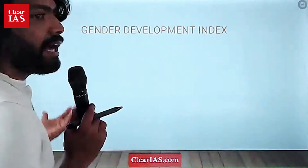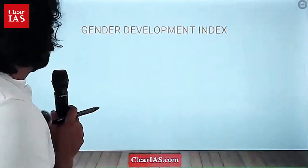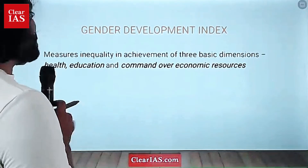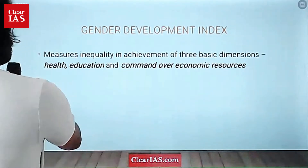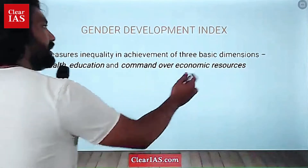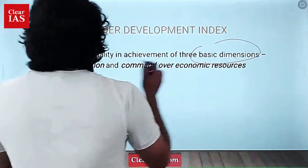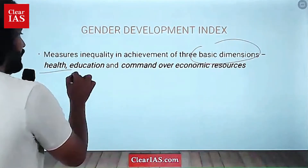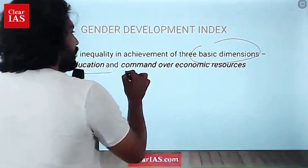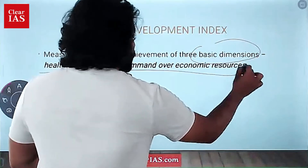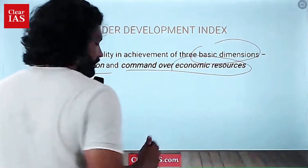The Gender Development Index, GDI, measures inequality in the achievement of three basic dimensions: health, education, and command over economic resources.